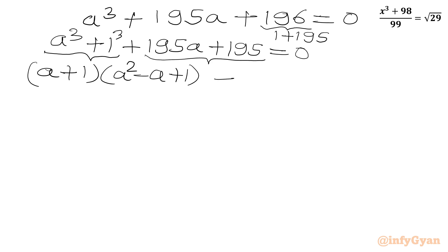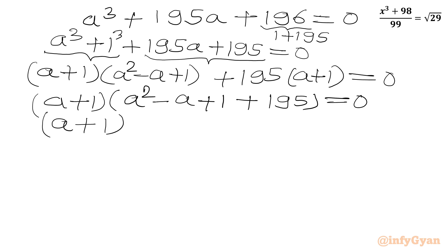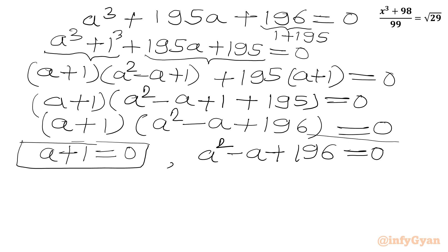So here we can apply the a cubed plus b cubed formula. Let us apply: a plus 1 times a squared minus a plus 1. And from these two terms I will take 195 common out. So in the bracket we will have a plus 1. So a plus 1 is overall common. In the other bracket we will get a squared minus a plus 1 plus 195 equals 0, or a plus 1 times a squared minus a plus 196 equals 0.